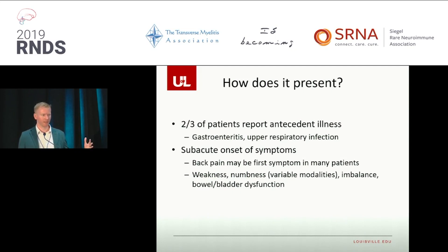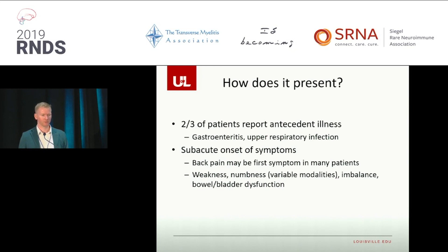People can have symptoms that span the entire spectrum of the nervous system — weakness, numbness, loss of temperature sensation, loss of vibration sense, inability to tell where your arms or legs are in space. You can have imbalance, new onset constipation or incontinence, or suddenly be unable to urinate. Symptoms should evolve over 24 to 48 hours, and classically people will reach their nadir by about five to seven days.